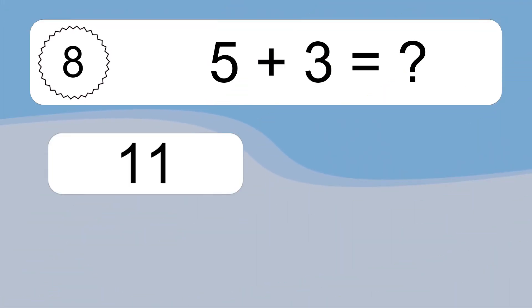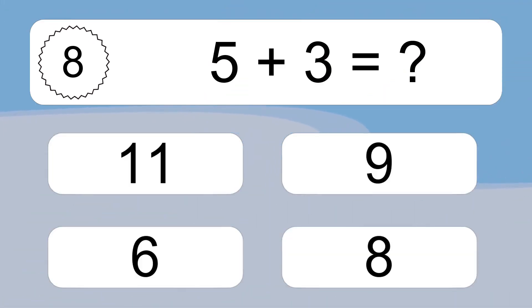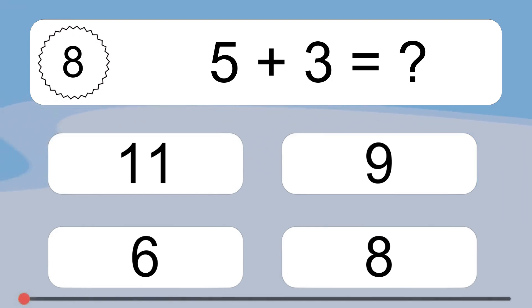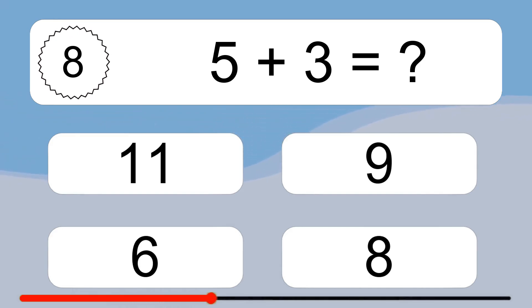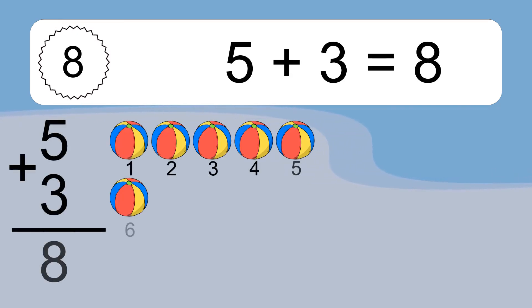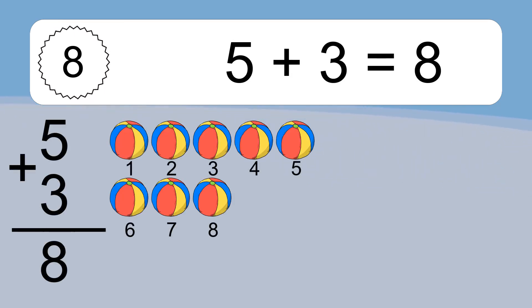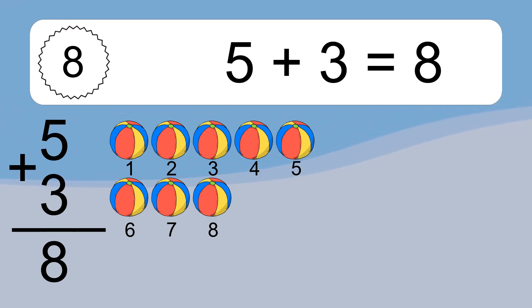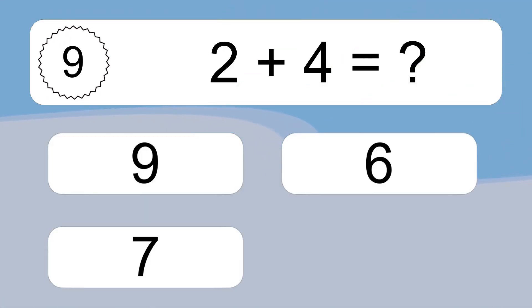5 plus 3 equals what? 5 plus 3 equals 8. Let's count it: 1, 2, 3, 4, 5, 6, 7, 8.